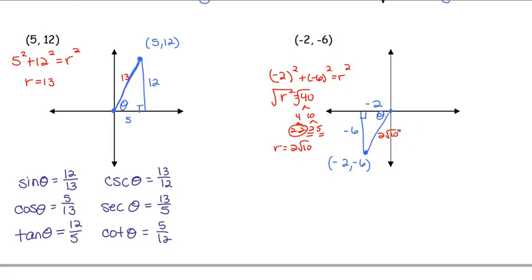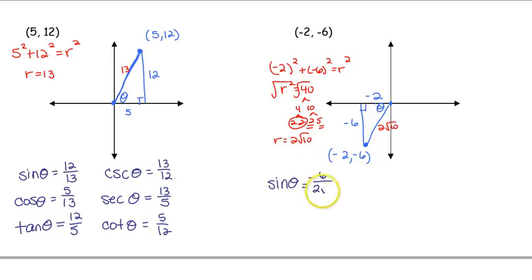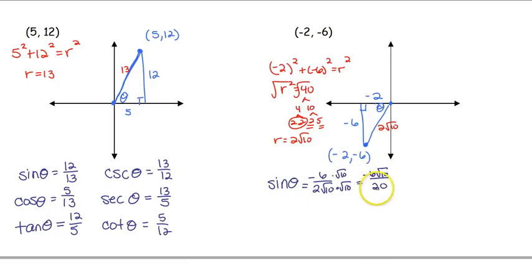We know we have a square root so things won't be as easy. Sine of theta is opposite over hypotenuse: -6 over 2√10. To rationalize, we multiply top and bottom by √10, giving us -6√10 over 20. We reduce -6 over 20 to get -3√10 all over 10.